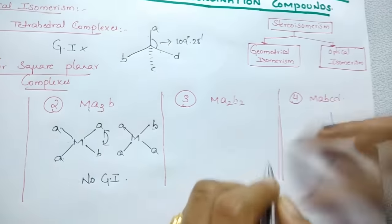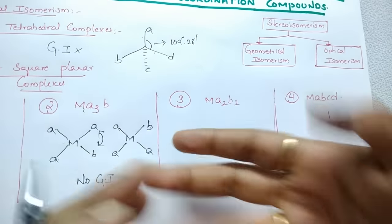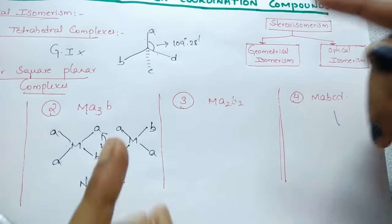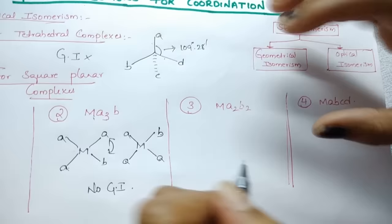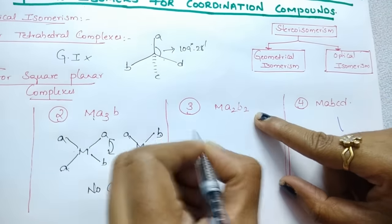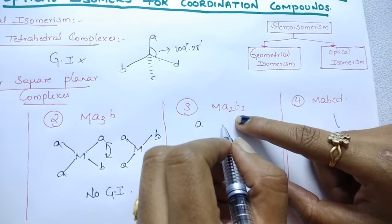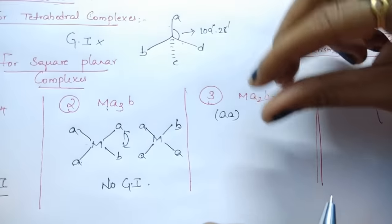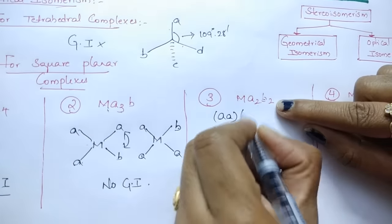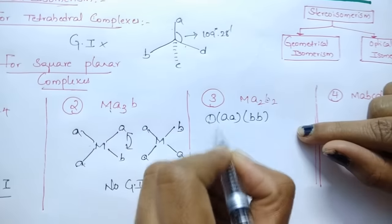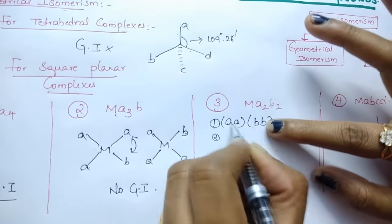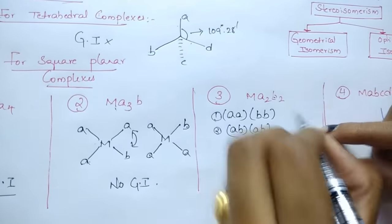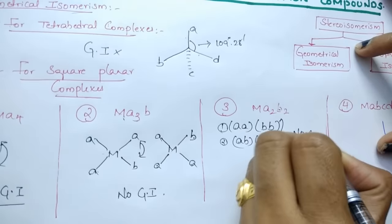For MA2B2, writing and finding geometrical isomers the long way takes time in exams. Now, as your favorite, let us discuss the trick. Just find how many combinations are possible. For MA2B2, we can write A2 as AA and take two ligands as one set. So BB is one combination. Another combination is AB, AB. No other combination is possible. So the number of geometrical isomers is 2.